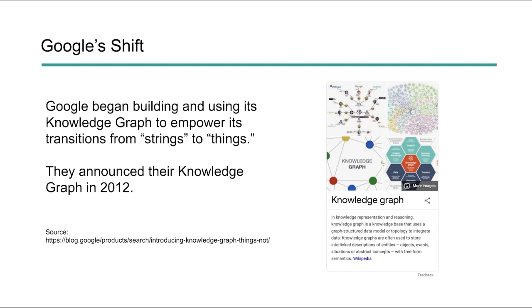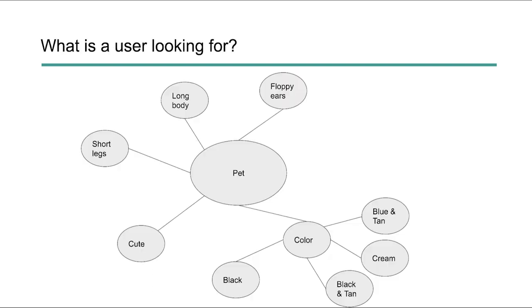Knowledge graphs in general — capital K, lowercase g — are any way that you and I can also represent our information on our own website. So Google uses a Knowledge Graph, but you can use one too. You can build your own knowledge graph and create structured elements on your website using that. It's important because Google is using them to understand what things mean. Instead of looking at strings — text — and finding other sites that talk about the same text, they now ask: what is this concept, what does this thing mean, and who is presenting the best result for this specific thing? Let's walk through the next couple of slides to show why they're so important to understanding user intent.